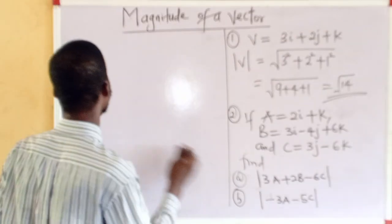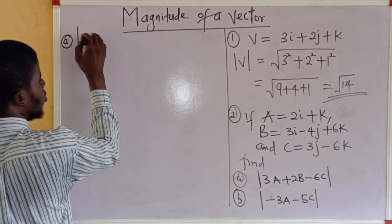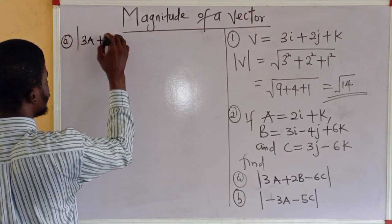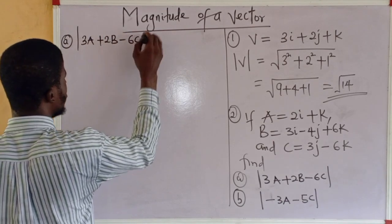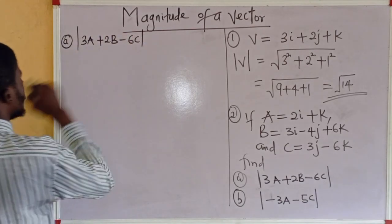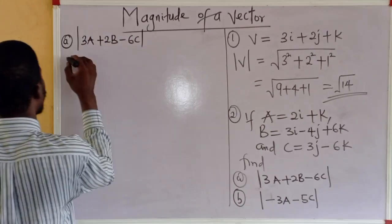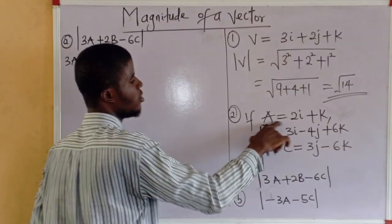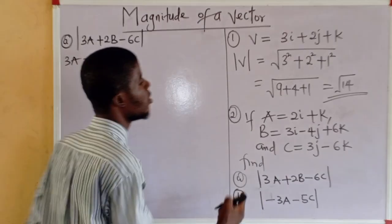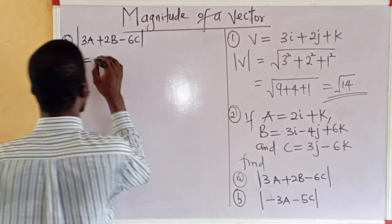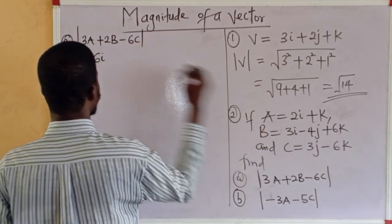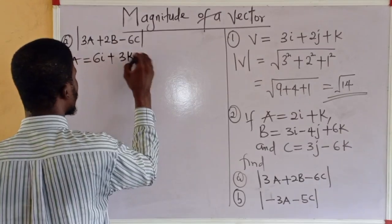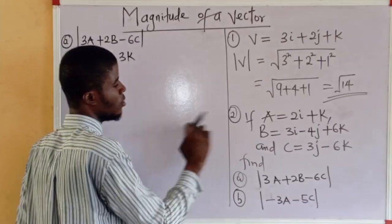Going with the first one, we have to determine the modulus of 3a + 2b - 6c. Let's do it this way. What's 3a, first of all? 3a is obtained by multiplying this a by 3. 3 times 2i, that's 6i. 3 times k, that's 3k. Now, look at this very well.